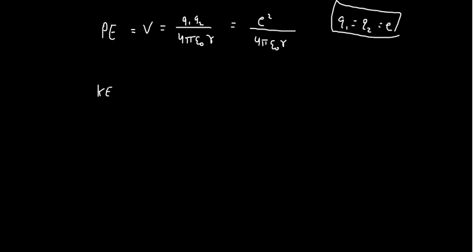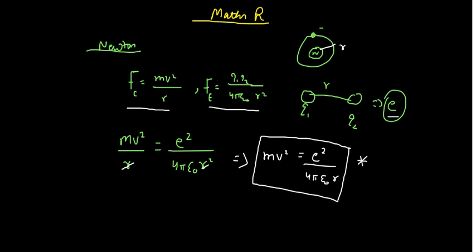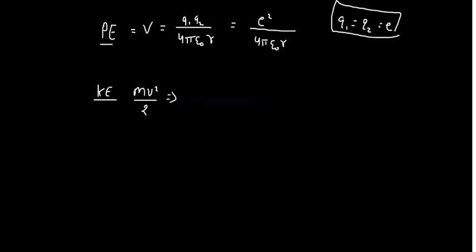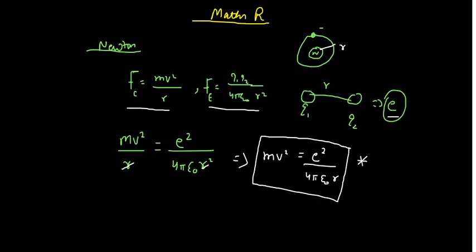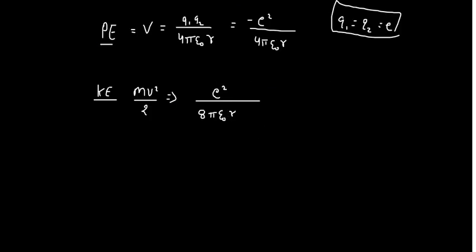Now it's time to see the kinetic energy, which is a little bit more interesting. Kinetic energy is mv² by 2. From the previous result, mv² is equal to E² divided by 4πε₀R, so we use that directly. Therefore kinetic energy becomes E² divided by 8πε₀R. For the potential energy, we include a negative sign because the potential energy is always negative based on the charges. Kinetic energy itself is not negative. That's why the denominator goes from 4 to 8 — because of the factor of 2.